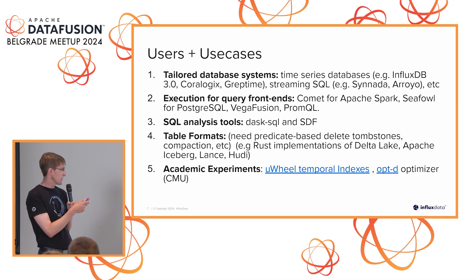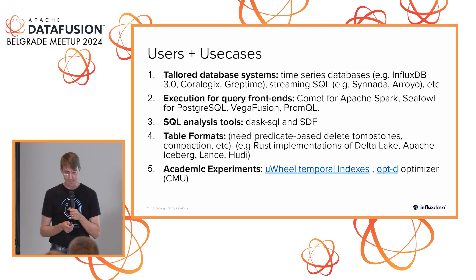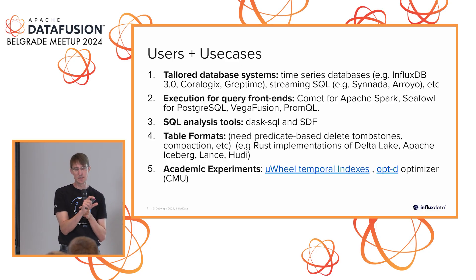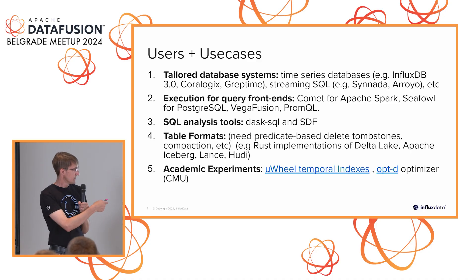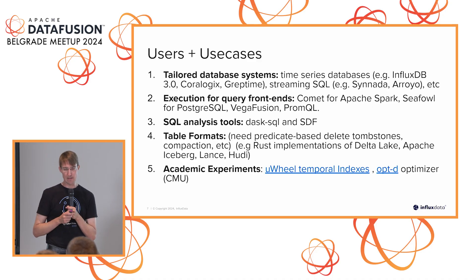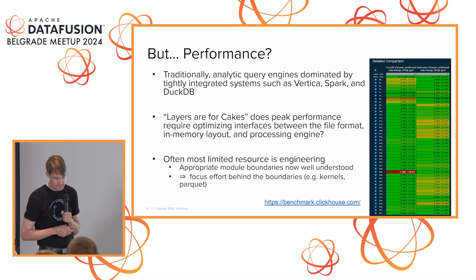We're also increasingly seeing people use DataFusion as a way to do academic experiments. There are some cool examples of specialized indexes — for example, for time series, like some version of an OLAP cube. People are working on the optimizer and other things. It's seeing use cases all over the place.